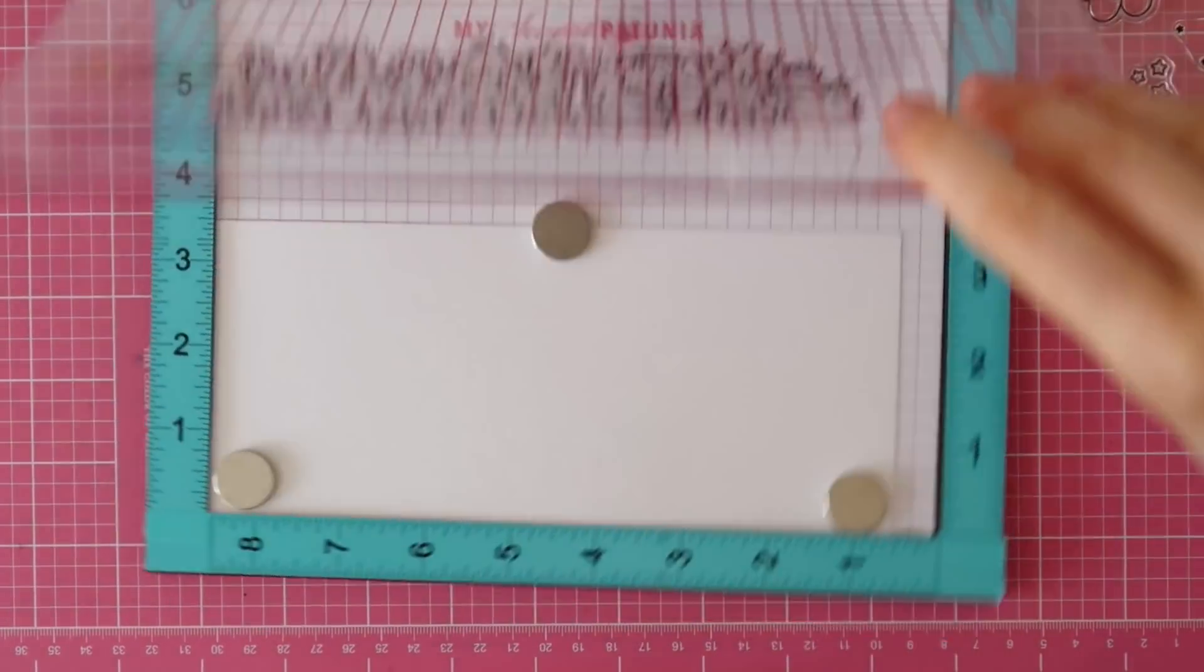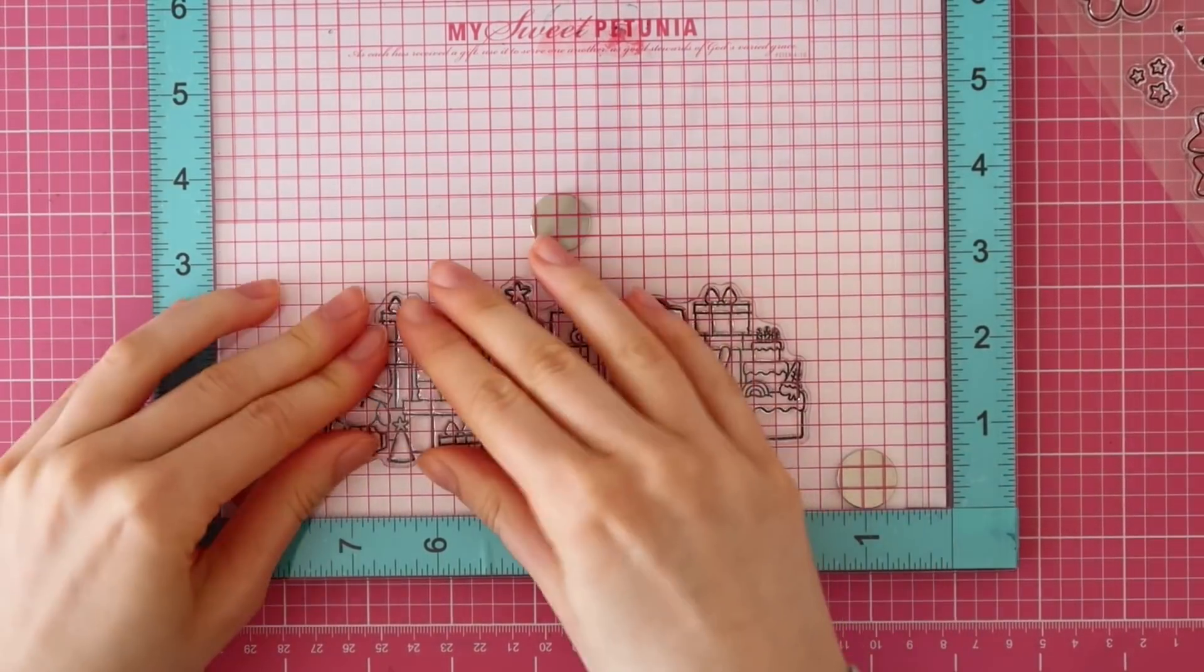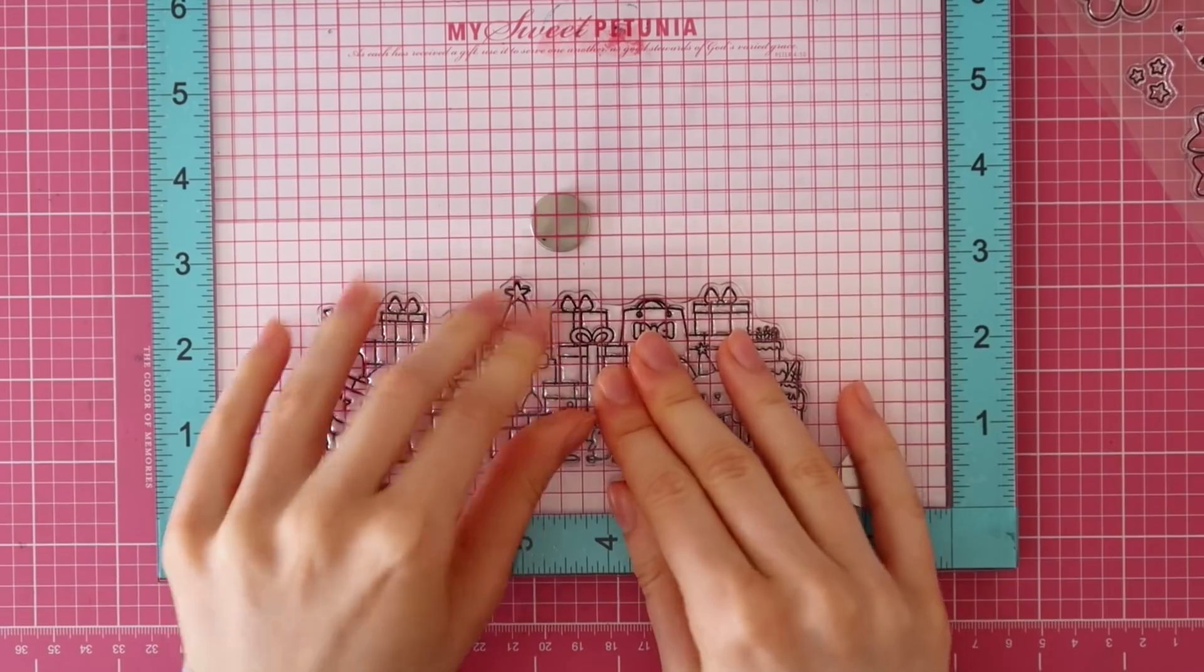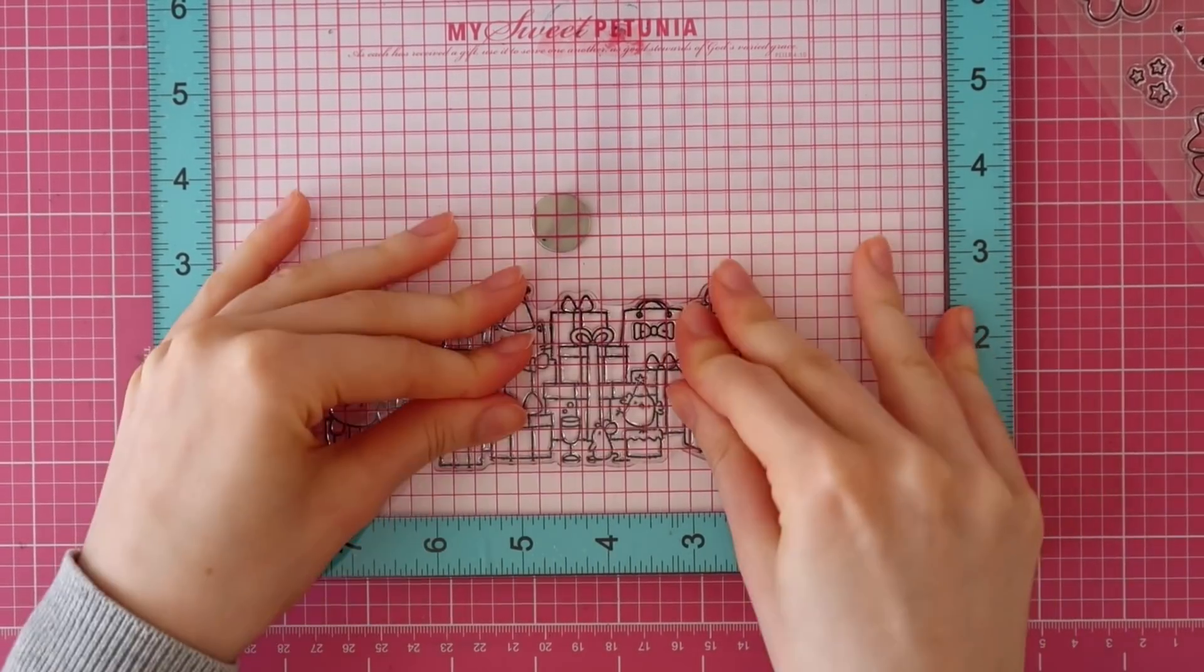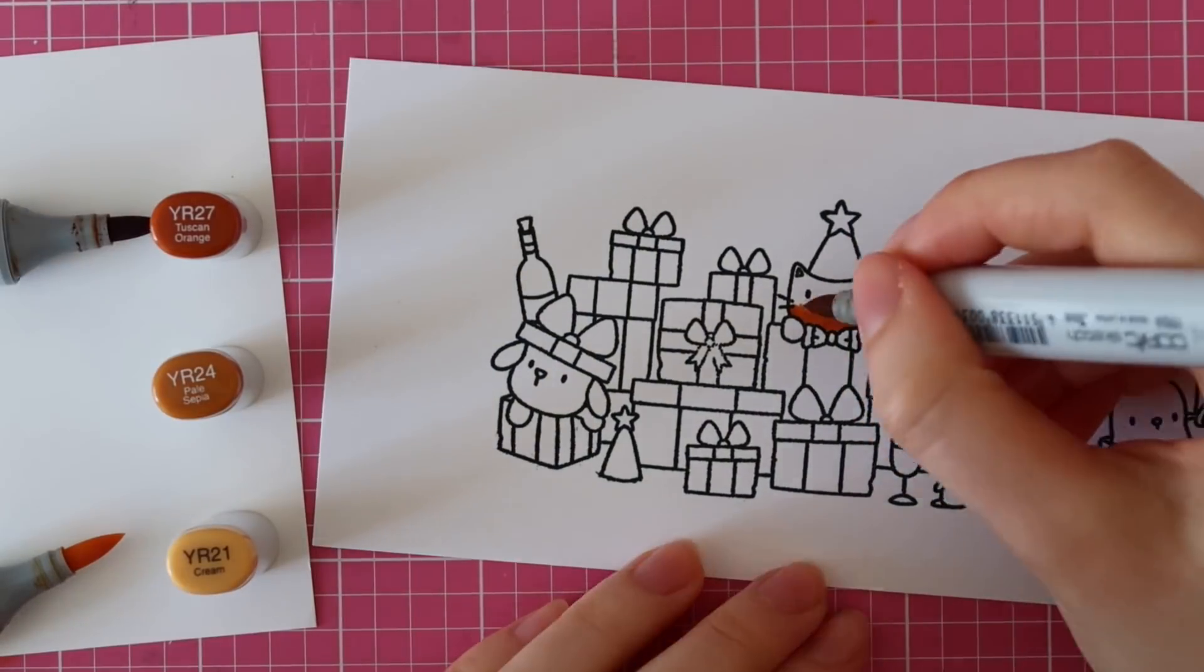I'm using some Memento Textile Black ink to ink that up and then I am stamping it. When I ordered this stamp set, I just couldn't wait to stamp this big design and to color it with the Copic markers.